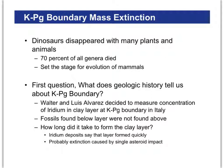65 million years ago, when we had this Cretaceous-Paleogene mass extinction, that was the disappearance of the dinosaurs. It's believed 70% of all the genera of plants and animals died, including the dinosaurs. So really what it did was set the stage for the takeover of mammals on land — things like woolly mammoths, saber-toothed cats, and that kind of thing.